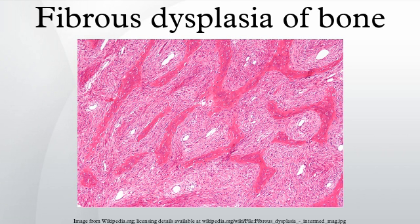Pathophysiology: In fibrous dysplasia, the medullary cavity of bones is filled with fibrous tissue, causing the expansion of the areas of bone involved. The bony trabeculae are abnormally thin and irregular, and often likened to Chinese characters. Fibrous dysplasia is characterized by Shepherd's Crook deformity, which refers to a coxa vara angulation of the proximal femur.